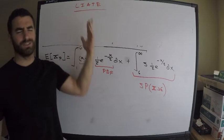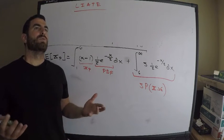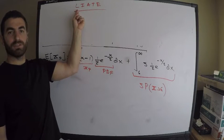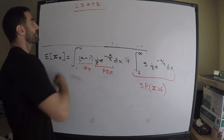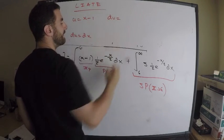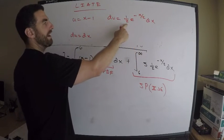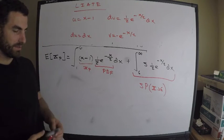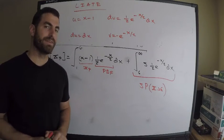For integration by parts I use the LIATE technique to determine u. LIATE stands for Logarithmic, Inverse trig, Algebraic, Trigonometric, Exponential — the order in which to choose u. My integrand has an algebraic term and an exponential term. Algebraic comes before exponential in LIATE, so I let u equal x minus one, giving du equals dx. Then dv is one-half e to the negative x over two. I recommend including the half with dv for convenience. If integration by parts were needed more than once, use the tabular method.